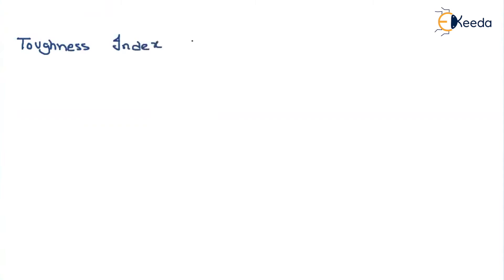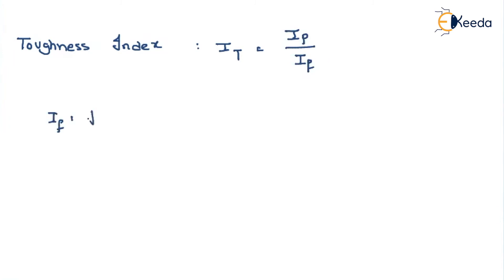By using this parameter, sometimes we can understand the shear strength of the soil mass. The toughness index is represented by I subscript t, which equals the plasticity index divided by If. If is nothing but the flow index.